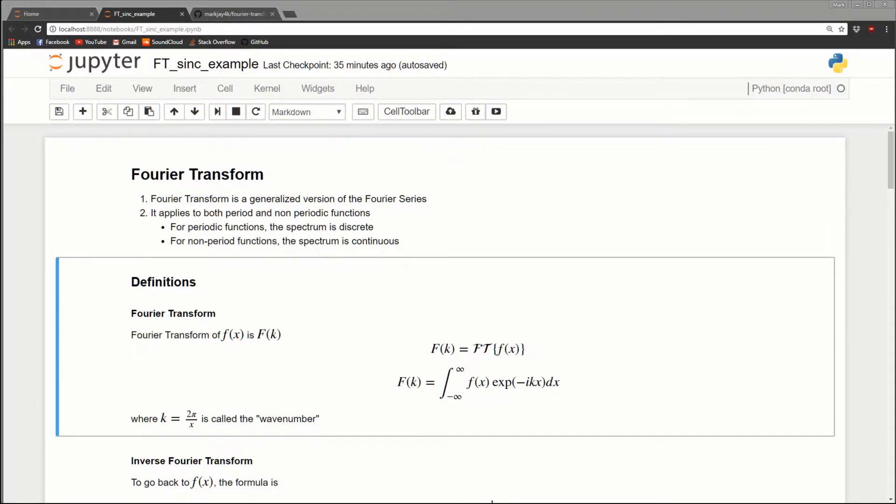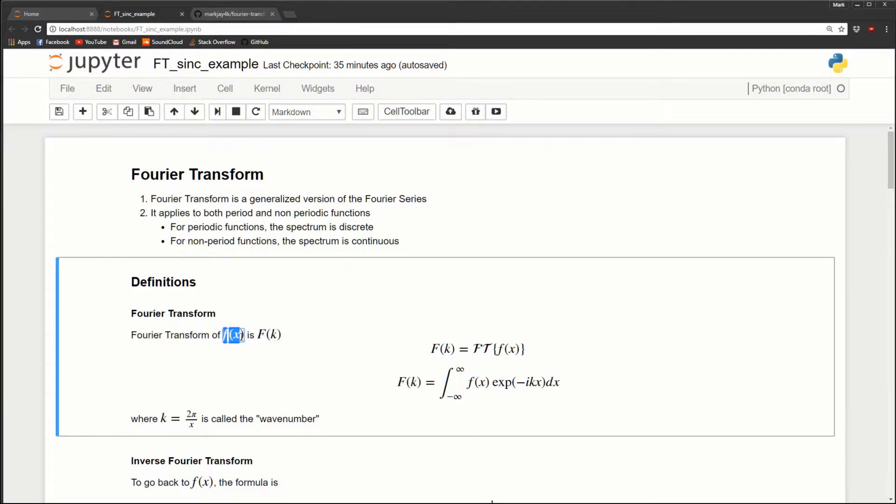Now let's move on to the definition. We write our function as little f of x and we write its transform as big F of k. We can write it as F(k) equals fancy FT of f(x), which means take the Fourier transform of f(x). We can define it mathematically as F(k) equals the integral from minus infinity to positive infinity of our function f(x) times this exponent, e to the minus ikx times dx. k is called the wave number and it equals 2π over x.